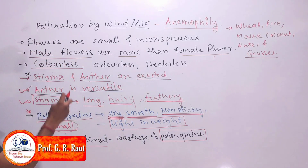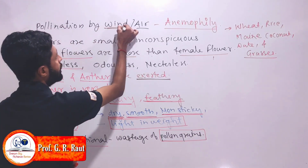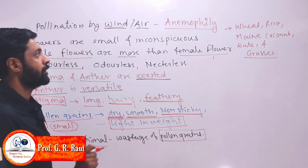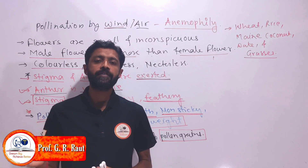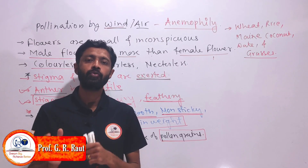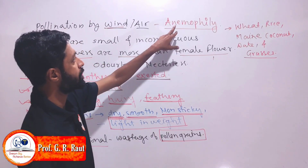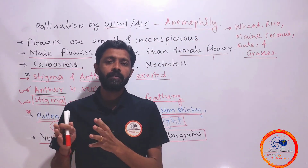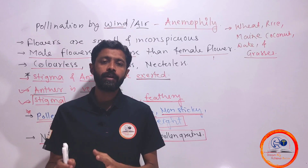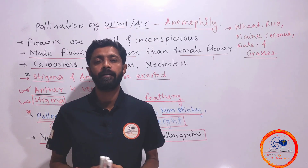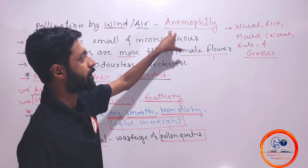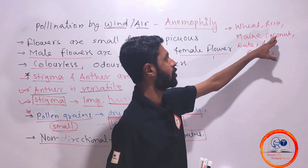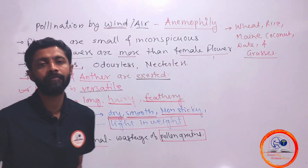We will see pollination by an abiotic agent — that is wind or air. When pollen grains are transferred from anther to stigma through air, that kind of pollination we call anemophily. Anemophily is the most common type of pollination utilizing an abiotic pollinating agent. Anemophilous flowers or anemophily happens in wheat, rice, maize, coconut, date palm, and most grasses.